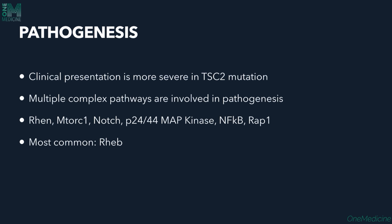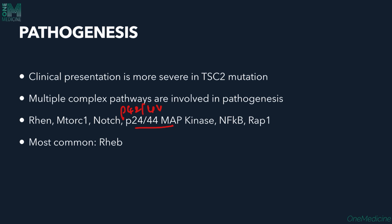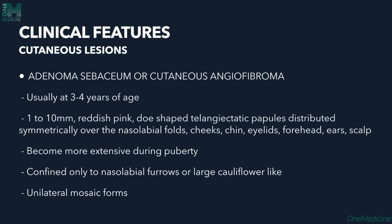Regarding pathogenesis, TSC2 mutations cause more severe clinical presentations. In 15% of cases no mutation is found; these non-mutated cases have fewer seizures but more renal angiomyolipomas and pulmonary lymphangiomyomas, with systemic involvement more severe than TSC1 but less than TSC2. Key pathways involved include the RHEB pathway, RHEB-mTOR, Notch, p42/44 MAP kinase, NF-kappa-B, and RAP1 pathways — the RHEB pathway being most prominent.